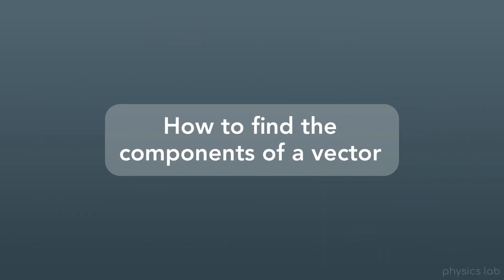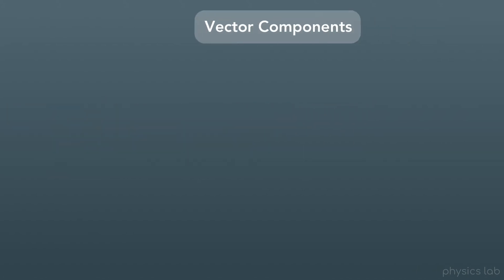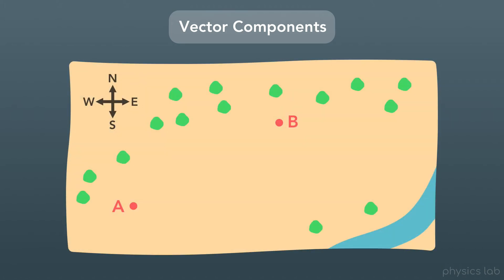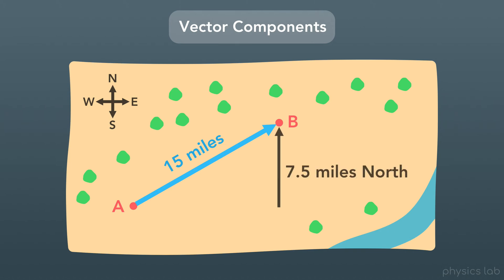Next, let's learn how to find the components of a vector. I think the easiest way is to picture a map with a compass. Imagine you're hiking from point A to point B in a straight line, and you travel 15 miles. So now you're at point B, and you physically hiked 15 miles straight. But how far north of point A are you? It turns out that you traveled 7.5 miles north of point A. And how far east of point A are you? It turns out that you traveled 13 miles east of point A.